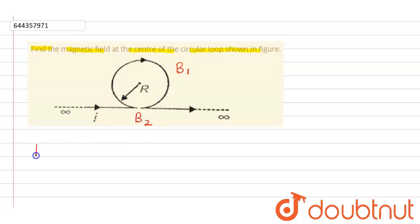Now for B1, we know the formula for magnetic field due to circular coil, circular loop at the center is given by μ₀/(4π) × 2πi/r. This is the formula.